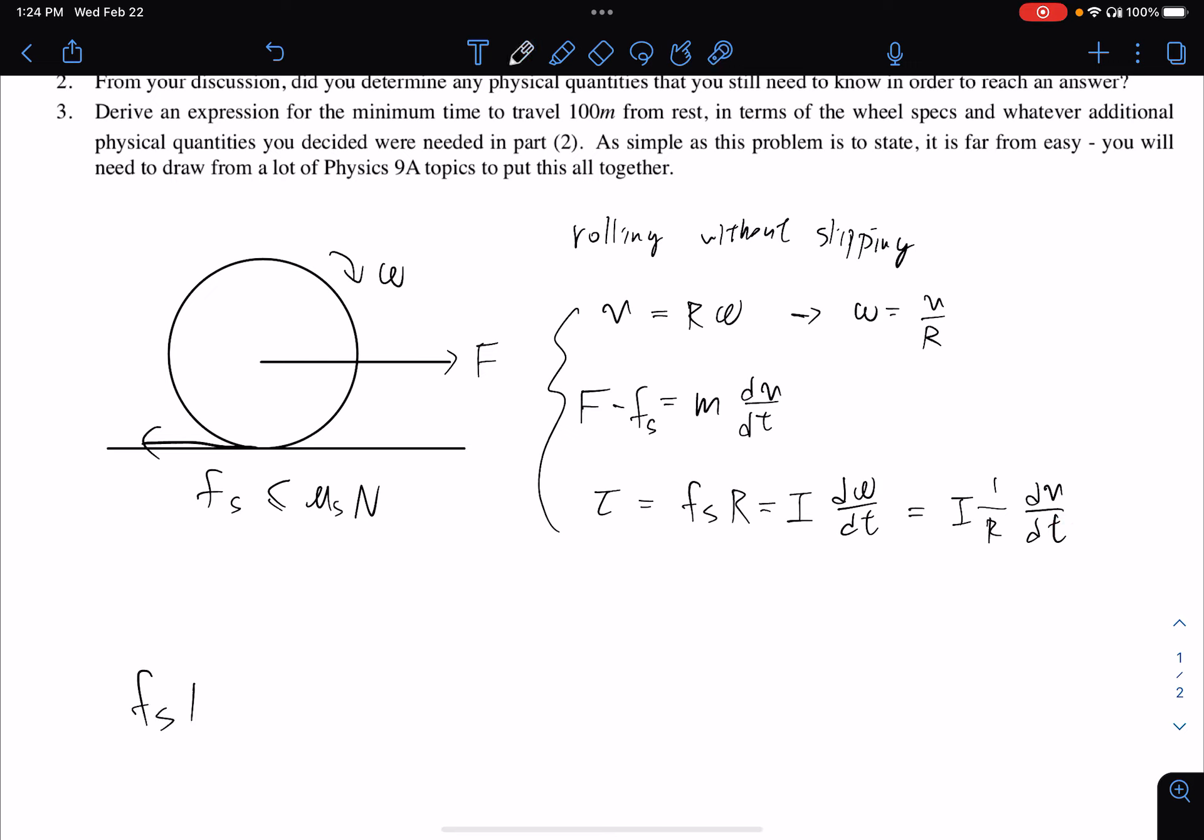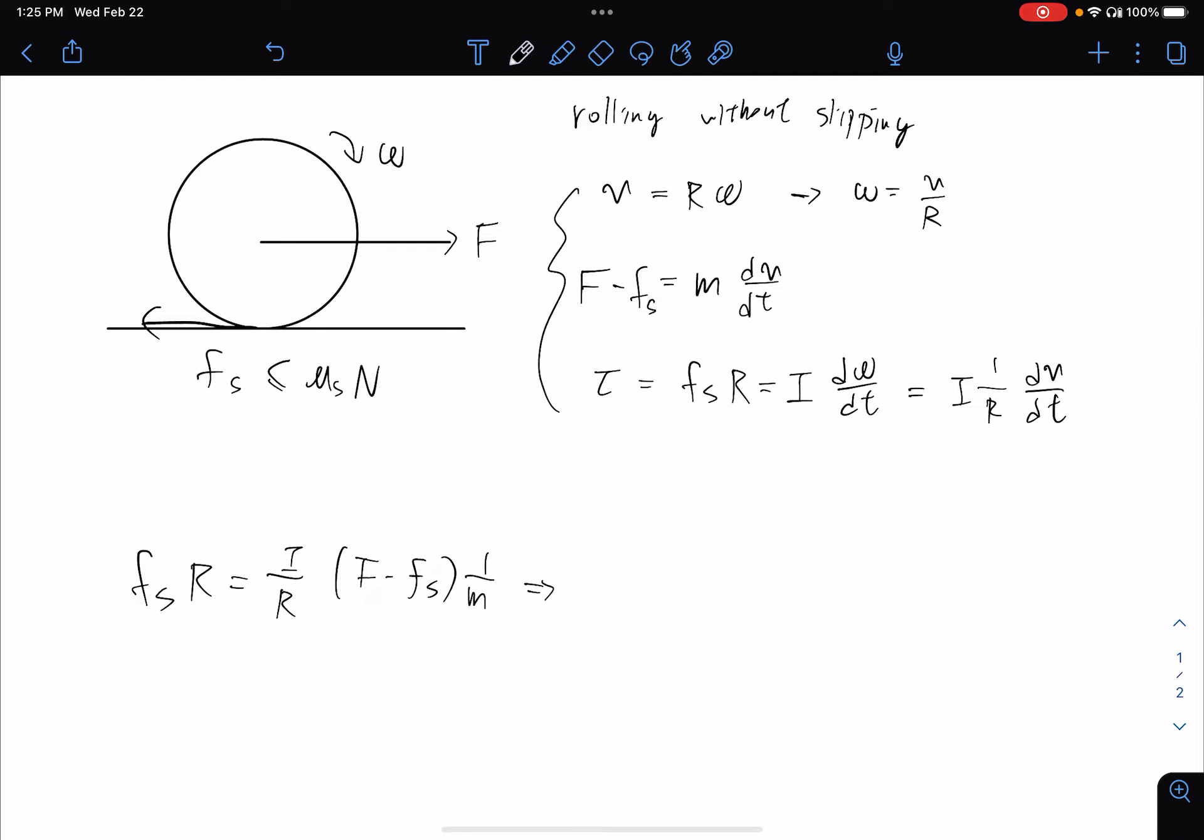So we have fₛ times r equals I over r times (F minus fₛ) divided by m. Here I just plug in the formula for dv/dt from here. So now the entire equation has only, this entire equation will relate the capital F and the friction, which is the relation we want.